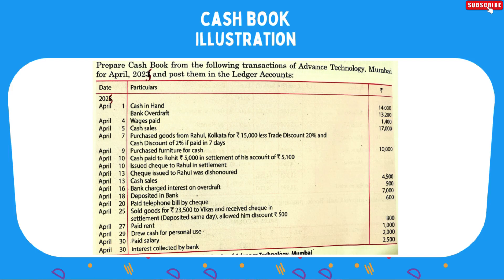The question gives us: cash in hand balance, bank overdraft, wages paid, cash sales for April 7 — purchased goods from Rahul, Kolkata for ₹15,000, less trade discount 20% and cash discount 2% if paid within 7 days. The condition is that if payment is made within 7 days, you will get the cash discount. Purchased furniture for cash. Cash paid to Rohit ₹5,000 in settlement of his account ₹5,100. April 10: issued cheque to Rahul in settlement.